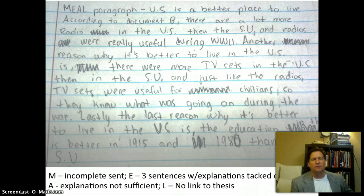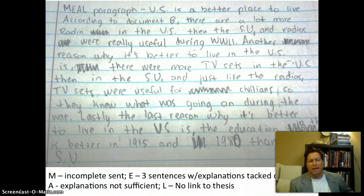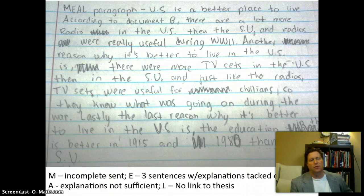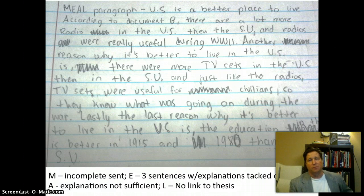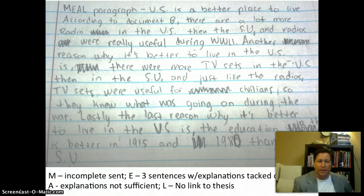So what we have here is a lot of incomplete sentences, three evidence sentences with explanations just kind of tacked on, and in the analysis, the explanations themselves are not sufficient. And then the big red flag is there's no link back to the thesis. Well, there really isn't a thesis — it's 'the US is a better place to live,' but we don't really know why in the beginning, and we don't know why at the end.